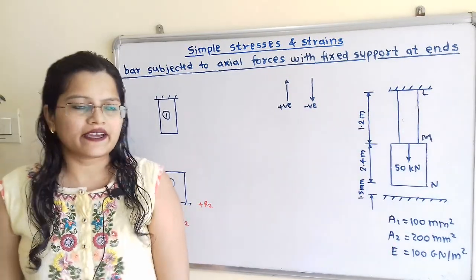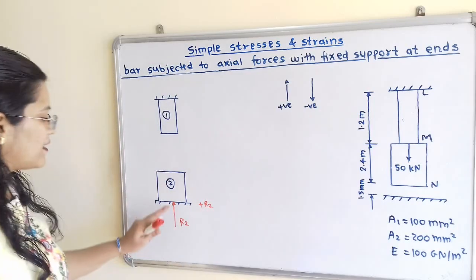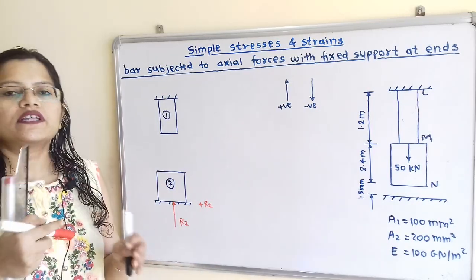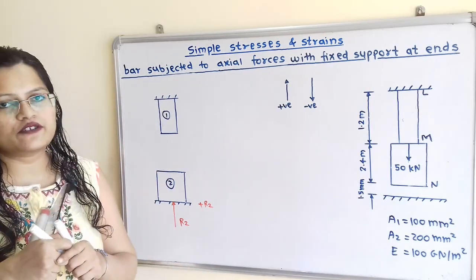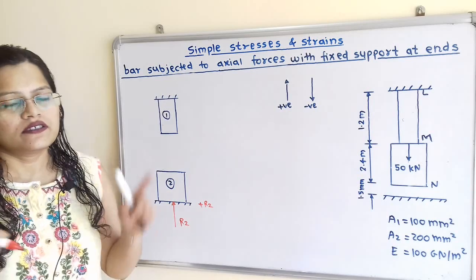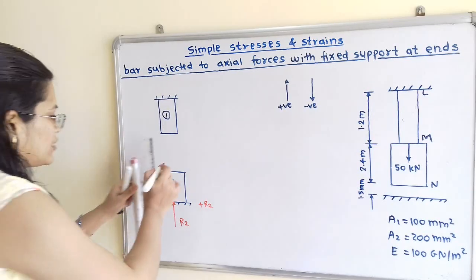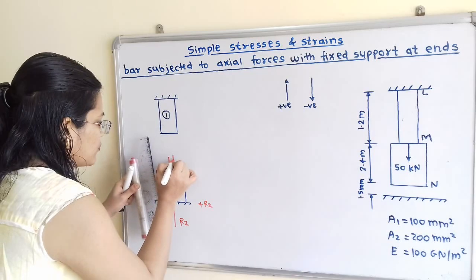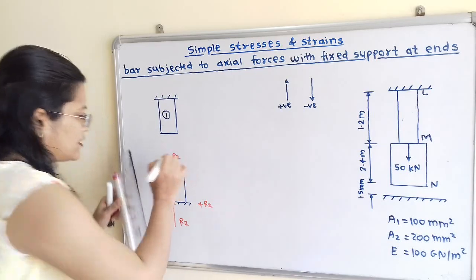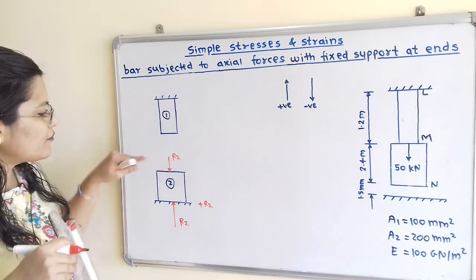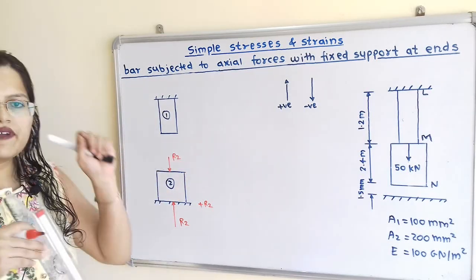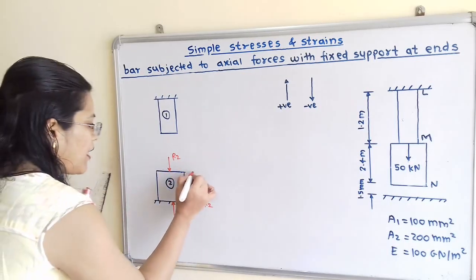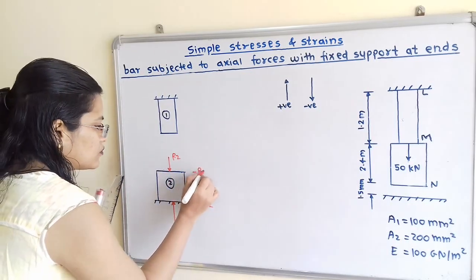This is the free body diagram, and to balance this force R2, we have to show the force R2 in the opposite direction. So I will show here R2 with opposite direction. If we observe, this R2 is having a downward direction, so its magnitude is minus R2.